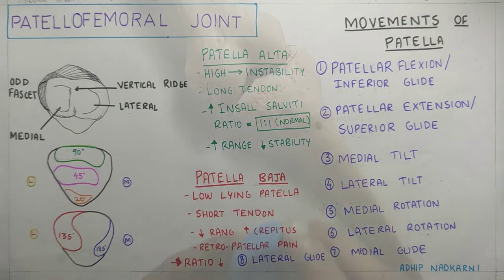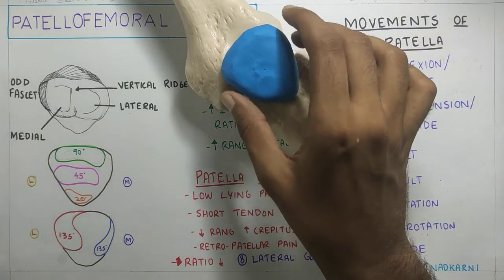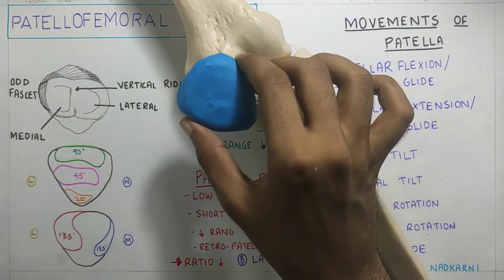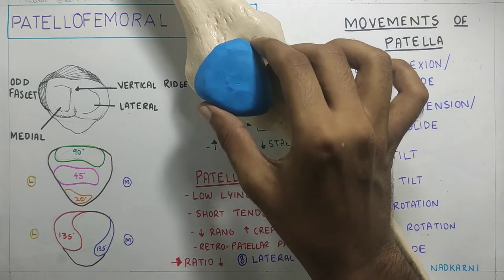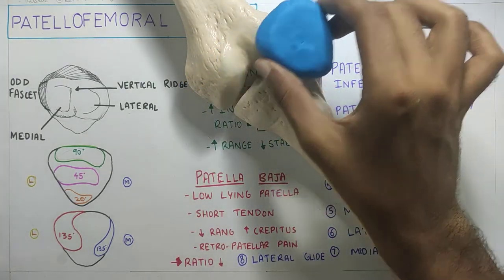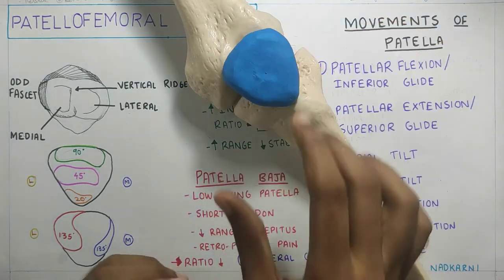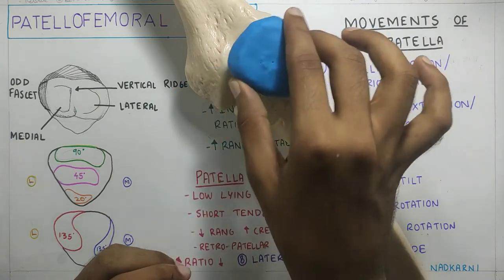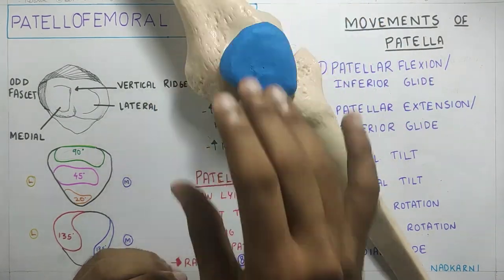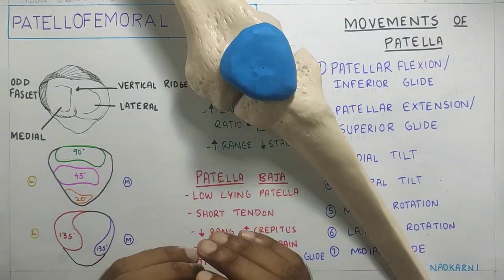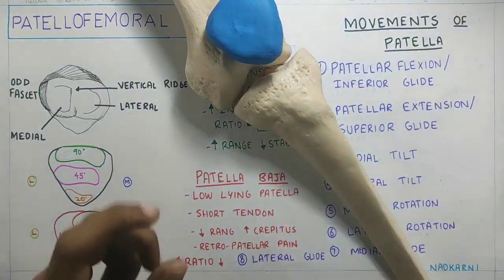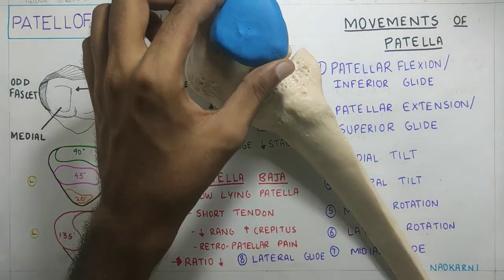The last movement is medial glide and lateral glide. When the patella glides medially it is called medial glide, and when it glides laterally it is called lateral glide. This glide occurs when the knee joint goes from the fully extended to the fully flexed position.